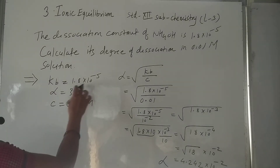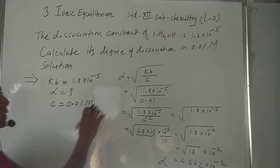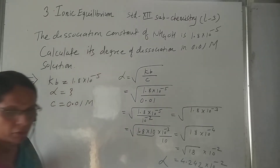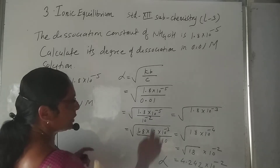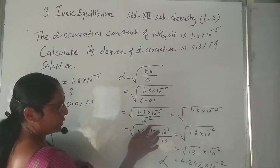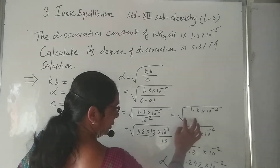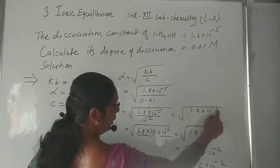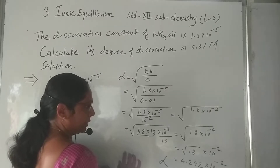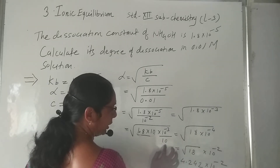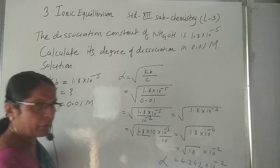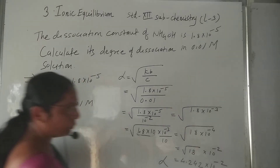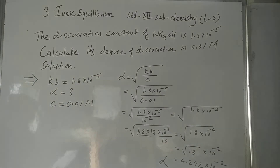To recap: Kb is given as 1.8 × 10⁻⁵ and C is given as 0.01. We need to find alpha using α = √(Kb/C). Simplifying gives 1.8 × 10⁻³, then converting to even powers: 18 × 10⁻⁴. The square root of 18 is 4.244, so α = 4.244 × 10⁻². This is the answer for Numerical 2.